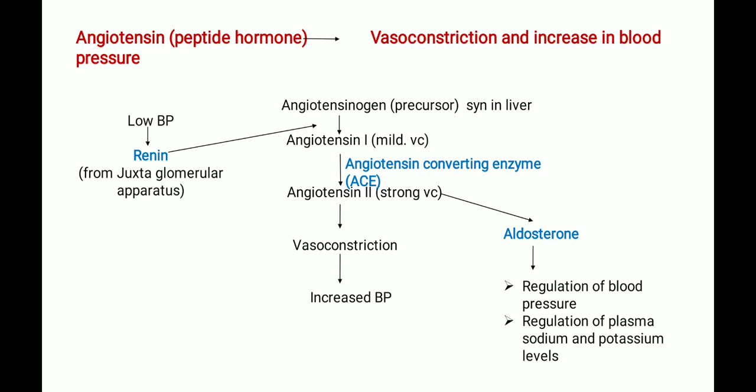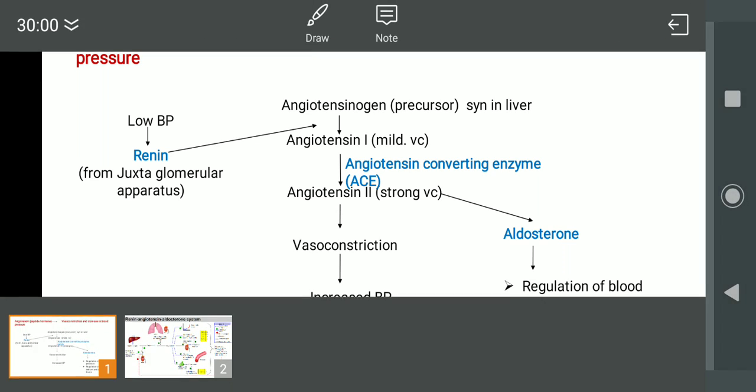Aldosterone helps in the regulation of blood pressure and the regulation of plasma sodium and potassium levels — correcting and maintaining these levels.